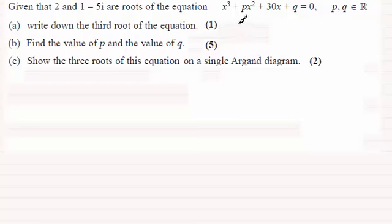So for part a the other root is going to be 1 plus 5i. Now if you're unsure of this idea about conjugate pairs for a solution to a polynomial equation, do check out my videos on my website for that.